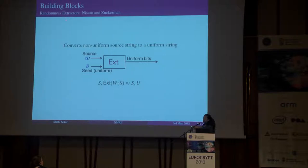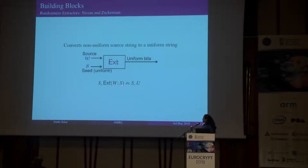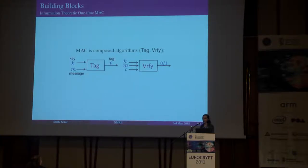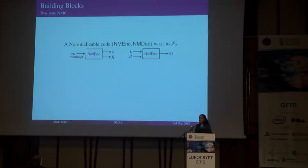The first building block is randomness extractors — tools which convert a non-uniform source W, along with a short uniform seed S, into nearly uniform bits. Formally, an extractor evaluated on source W and seed S looks uniform even given the seed. The second tool is information-theoretic one-time message authentication codes, consisting of a tag-generating algorithm and a verify algorithm. Using a key, the tag algorithm generates a tag on message M; the verify algorithm checks its validity. The security guarantee is that an adversary seeing one message-tag pair cannot forge a valid tag on another message.